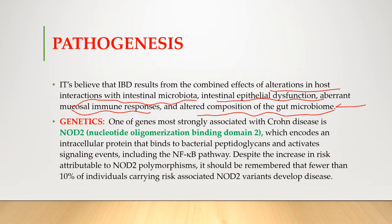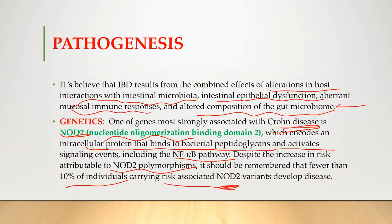One of the genes most strongly associated with Crohn's disease is NOD2, which stands for Nucleotide Oligomerization Binding Domain 2. It encodes an intracellular protein that binds to bacterial peptidoglycans and activates signaling events including the NF-κB pathway. Despite increased risk attributable to NOD2 polymorphisms, fewer than 10% of individuals with Crohn's disease carry risk-associated NOD2 variants.